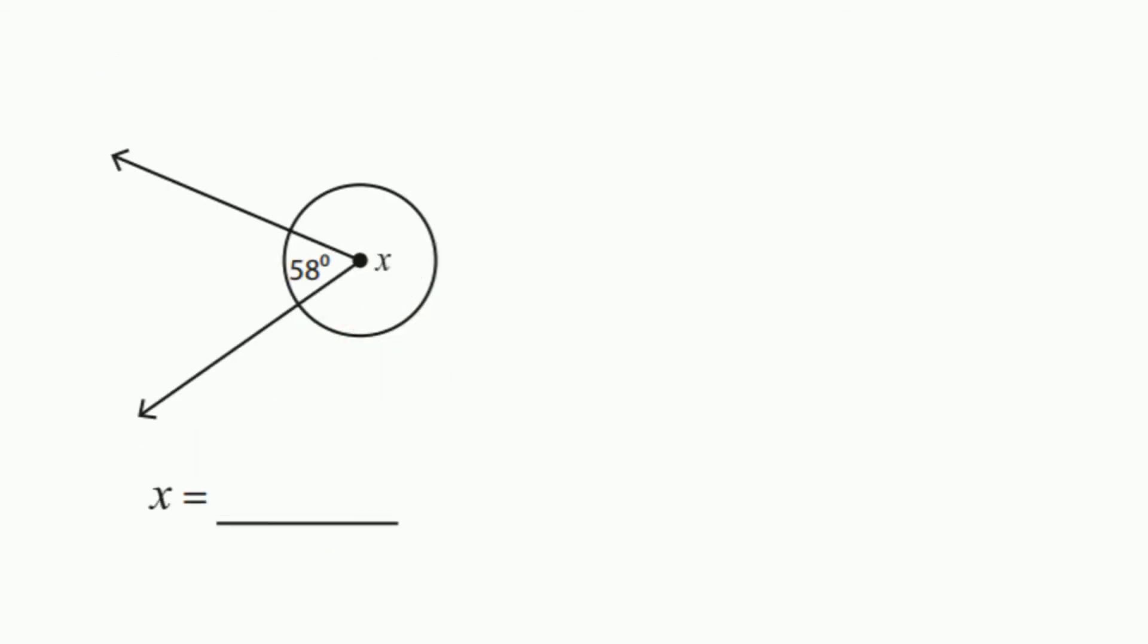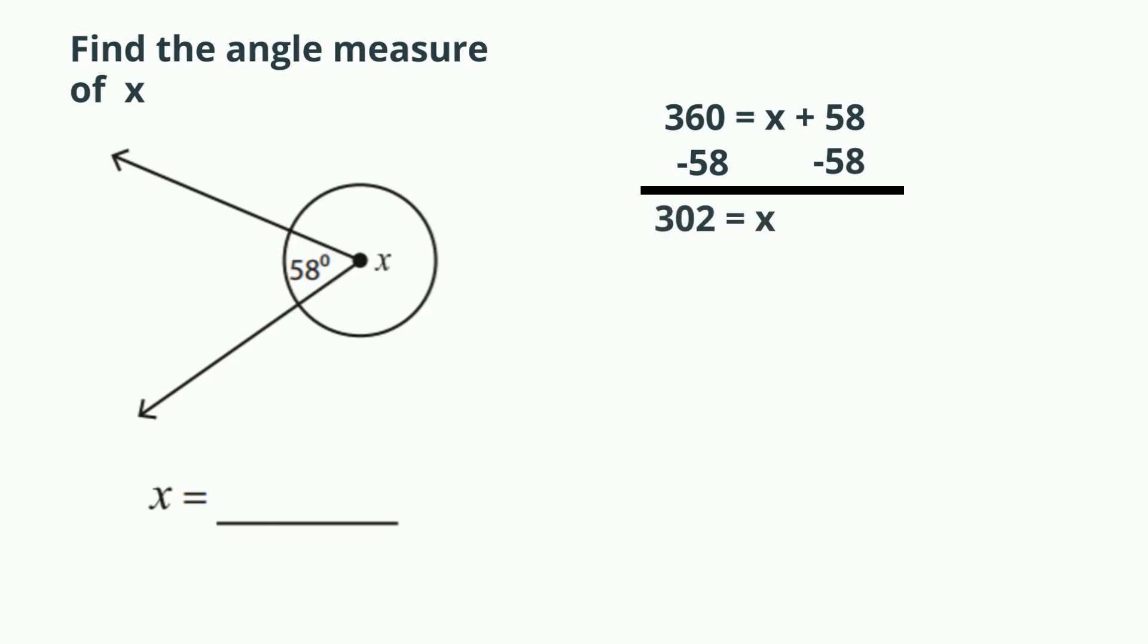Let's look at another example. Let's set 360 equal to x plus 58, subtract 58 from both sides. x equals 302, so the missing angle measure is 302.